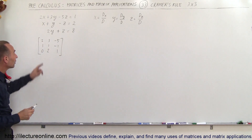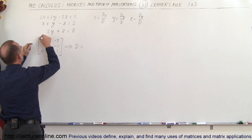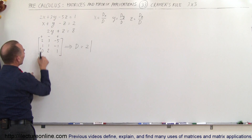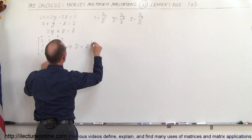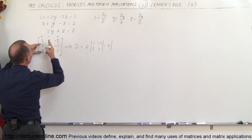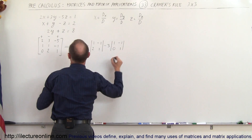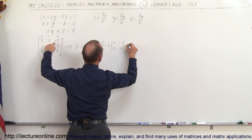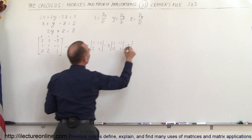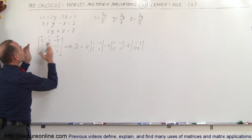Starting with the first one, the determinant D is found using the plus, minus, plus sign pattern. We take plus 2 times the determinant of the elements left when we block out that column and row — giving us 1, 2, minus 1, and positive 1 — minus 3 times the elements left when blocking the next column and row, which is 1, 0, negative 1, and 1, and then plus minus 5 times the remaining four elements 1, 1, 0, and 2.